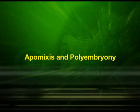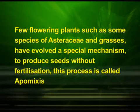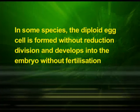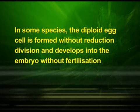Finally, let us discuss apomixis and polyembryony. Although seeds in general are the products of fertilization, a few flowering plants, such as some species of Asteraceae and grasses, have evolved a special mechanism to produce seeds without fertilization. This process is called apomixis. Apomixis is a form of asexual reproduction that mimics sexual reproduction. In some species, the diploid egg cell is formed without reduction division and develops into the embryo without fertilization.